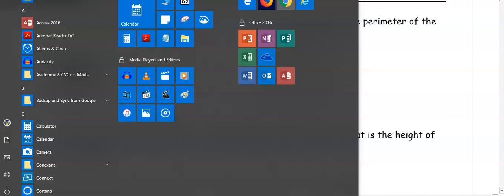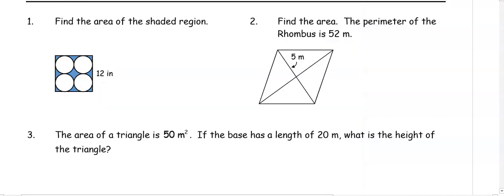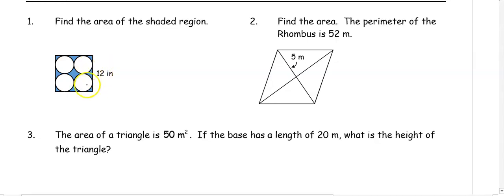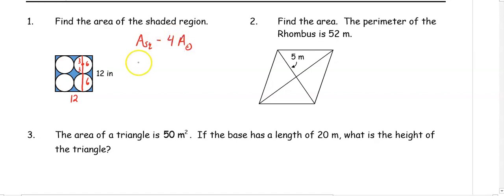In number one, we have find the area of the shaded region. A side of this is 12, which means the other side is going to be 12 because it's making two diameters going either way, so they have to be the same length. Then if we look at the two diameters, we know the diameters are six, and we split that in half so the radius of the circle is three. So we want the area of the square minus four times the area of the circle.